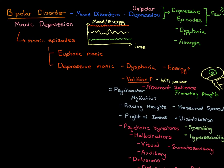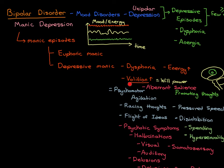In euphoric manic episodes, it is exactly the same as depressive manic episodes with regards to energy and volition going up — the only difference is that instead of dysphoria, you have euphoria. You are incredibly happy. Both your mood and your energy and your volition all go through the roof. You're incredibly happy, incredibly energetic, and your willpower and ease of doing things is also through the roof.